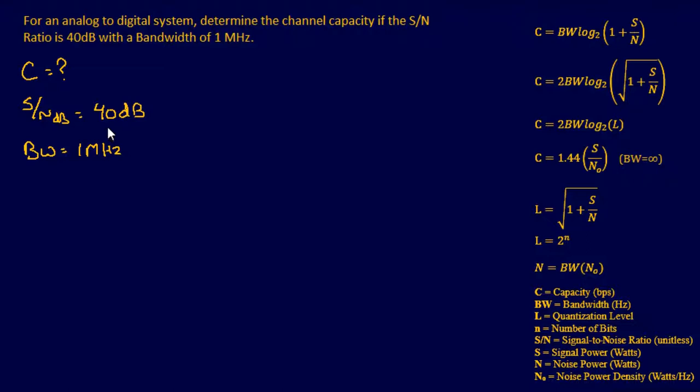This signal-to-noise ratio is in decibels, but we need a unitless ratio. So we'll convert decibels to the unitless ratio. Since we have signal-to-noise ratio and bandwidth, we'll use the standard capacity equation. First, we need to find the signal-to-noise ratio from decibels. The conversion is: dB equals 10 times log base 10 of power over power reference — in our case, signal over noise.